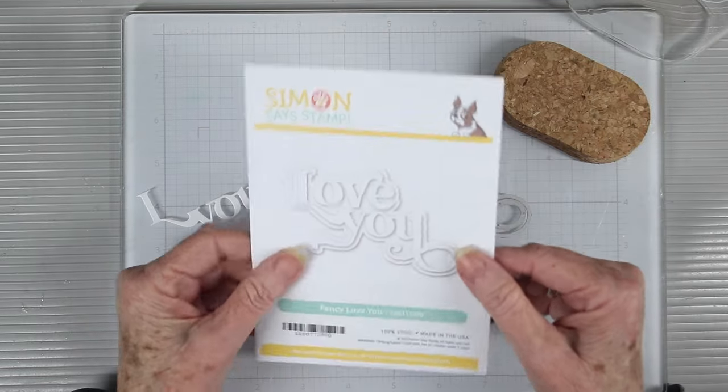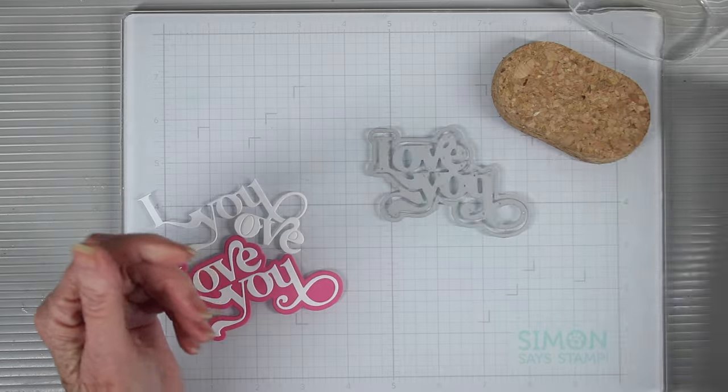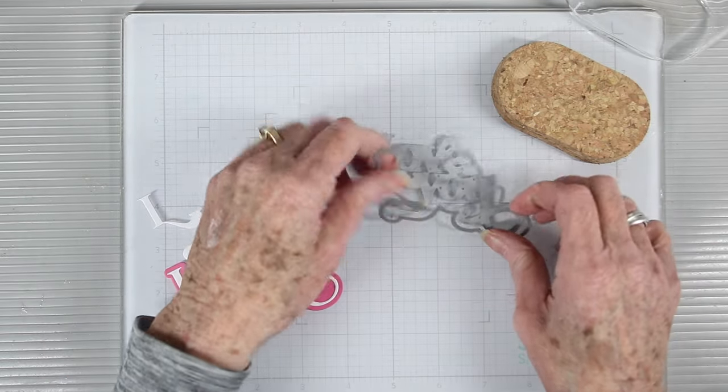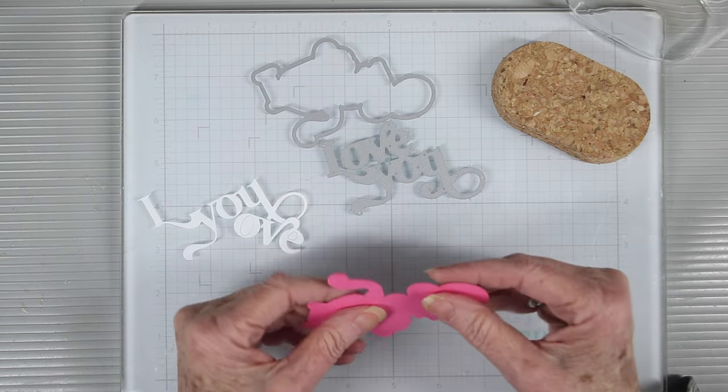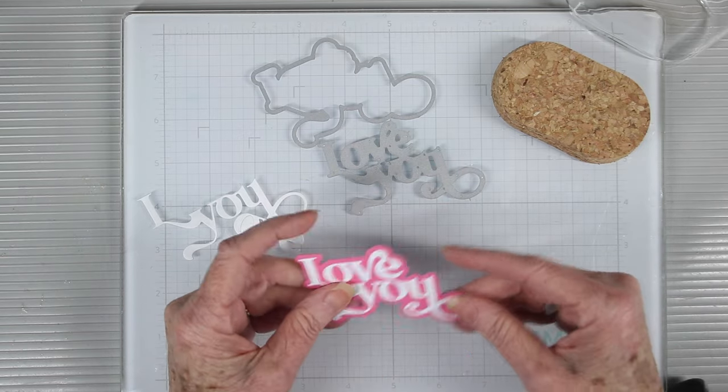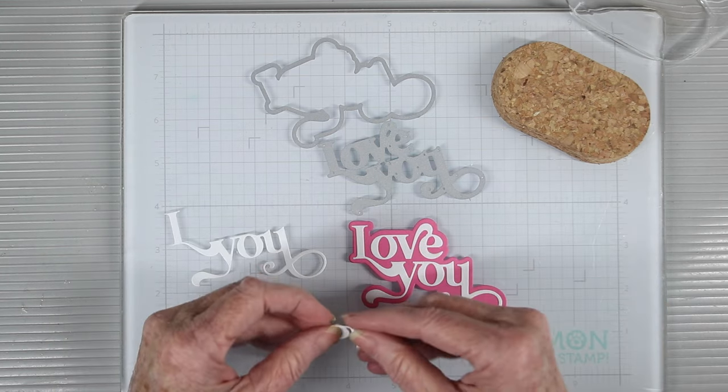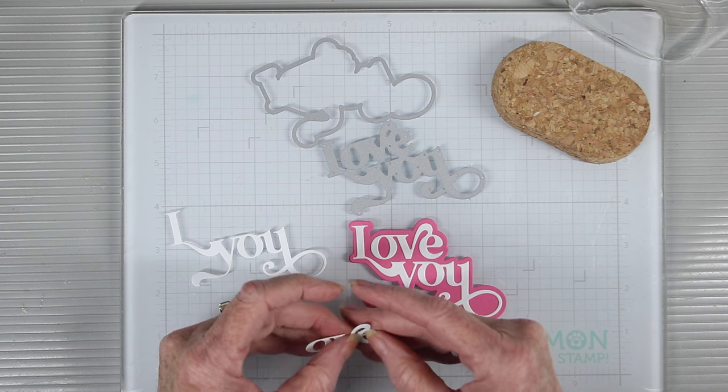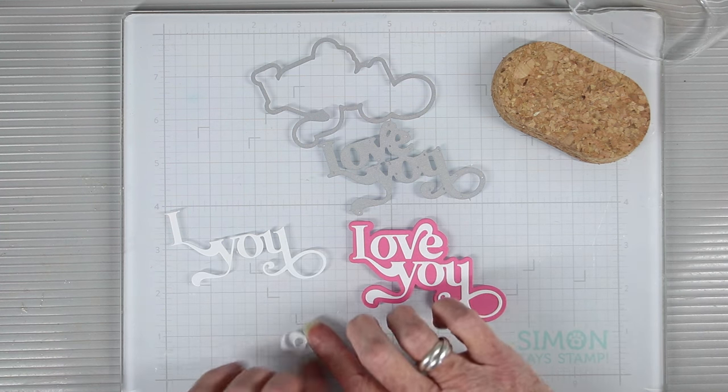The large die that I'm using is the Love You, and this is a fancy Love You, which is really beautiful with its swirls. It's a two-piece die, and I've cut the shadow piece out using some princess cardstock from Rainbow Splash, and I've also added one layer of the Love You die cut in white, and I'm going to add another layer on top just to give it a little bit of dimension.